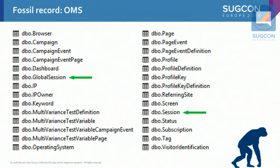These are the tables of OMS — not so many. They didn't have visits or visitors or interactions. They had session and global session. Session was more or less the ASP.NET session, and this is what we currently know as an online interaction. Global sessions were permanent cookies in the browser, which were associated with the device or with the browser. Right now we know them as devices and contacts.